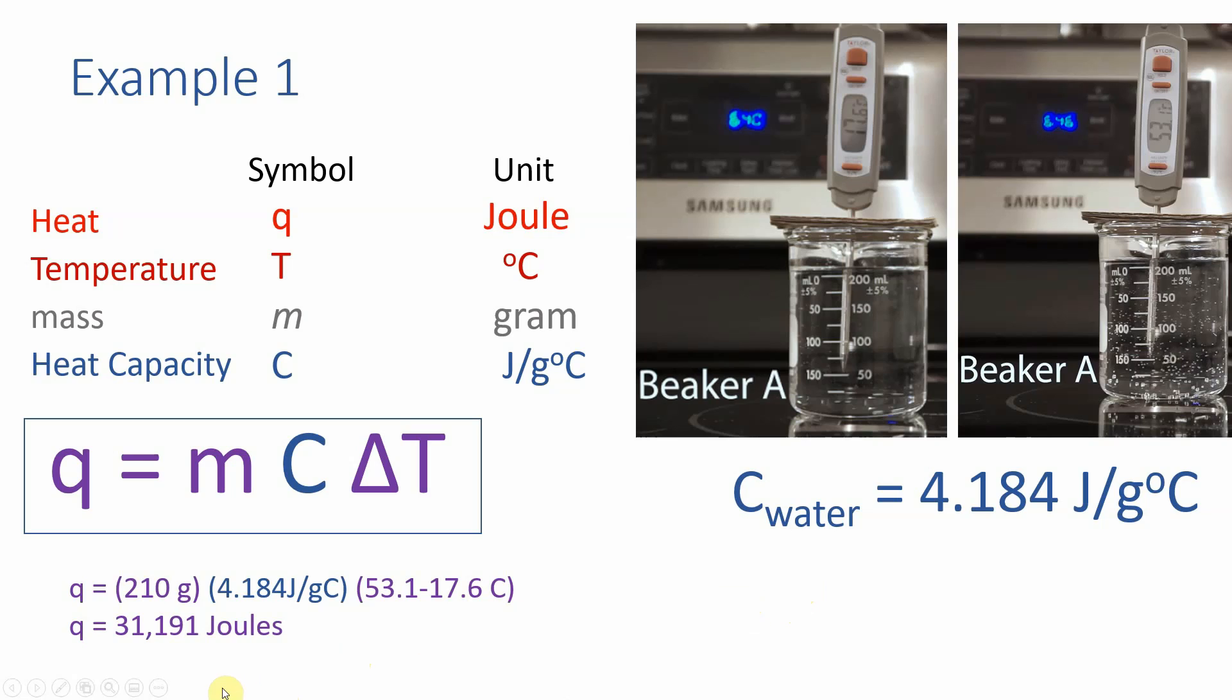Okay well here's what I got. I said it was 210 grams. We used 4.184. I did final minus initial, so 53 minus 17 and I got 31,191 joules. Not worried about sig figs at the moment but you remember if we did sig figs when we subtract these two we'd still be to the tenths place and I think that would still give us three sig figs. I don't think it gets down to two.